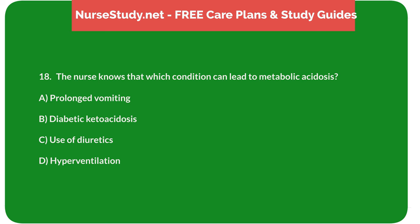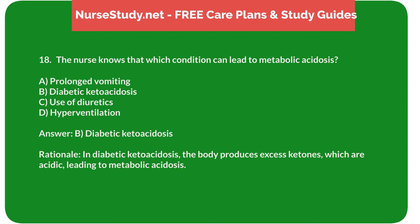Question 18: The nurse knows that which condition can lead to metabolic acidosis? A. Prolonged vomiting. B. Diabetic ketoacidosis. C. Use of diuretics. D. Hyperventilation. Answer: B. Diabetic ketoacidosis. Rationale: In diabetic ketoacidosis, the body produces excess ketones, which are acidic, leading to metabolic acidosis.